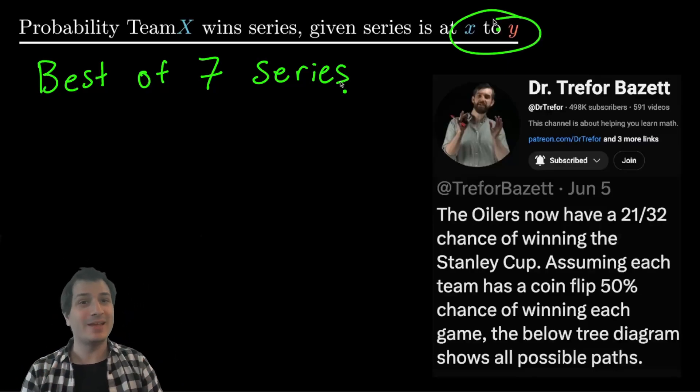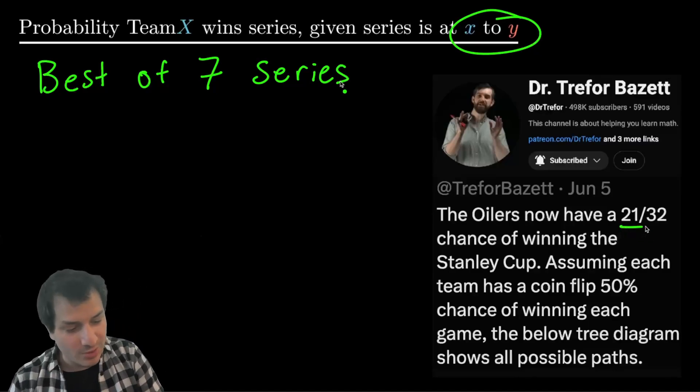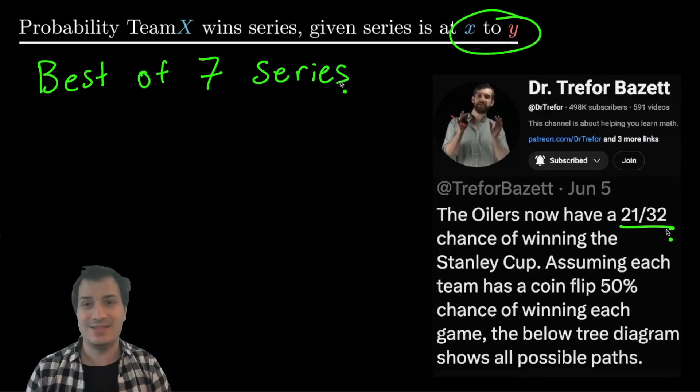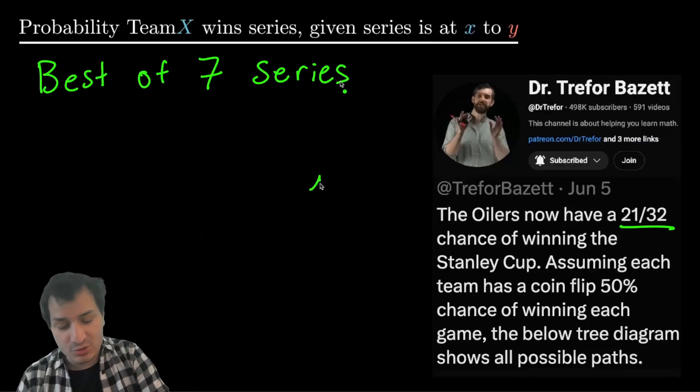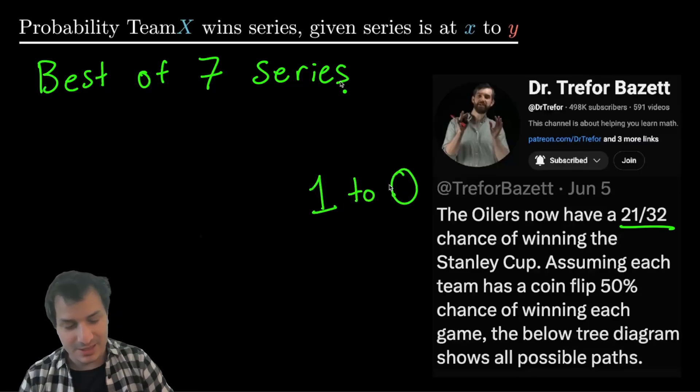This was inspired by a tweet by mathematician and YouTuber Dr. Treffer, who wrote, the Oilers now have a 21 out of 32 chance to win the Stanley Cup. So the Stanley Cup is a best of seven series, and the current score is one to nothing as I am making this video.